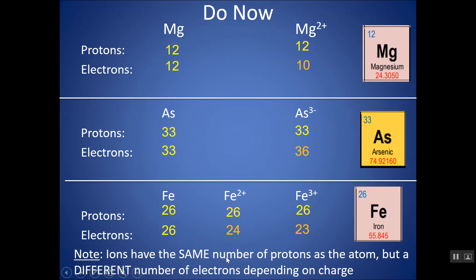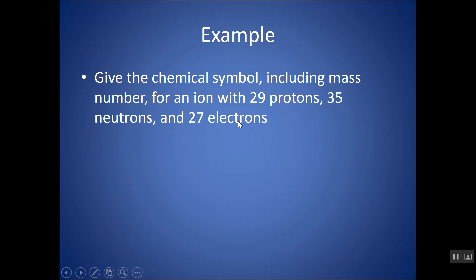Remember, ions have the same number of protons as the atom, but a different number of electrons depending on the charge. If you're struggling with any examples, it might help to first think about the atom, find the number of protons and electrons, and then either subtract or add electrons. Think about the atom first — where protons and electrons are equal — and then take away or add electrons as needed to form the ion.